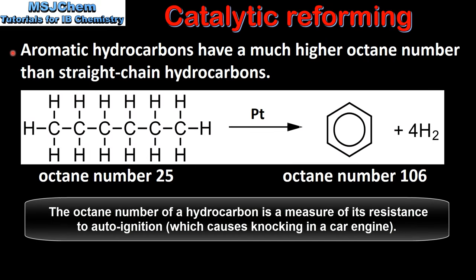Aromatic hydrocarbons have a much higher octane number than straight chain hydrocarbons. In the previous example we looked at hexane being converted into benzene. The octane number for hexane is 25 and the octane number of benzene is 106, showing that aromatic hydrocarbons have a much higher octane number than straight chain hydrocarbons.